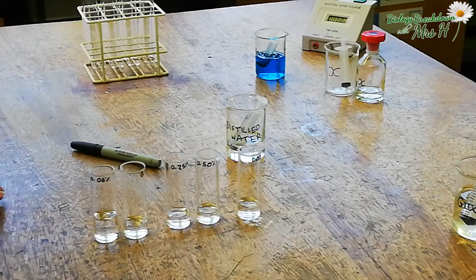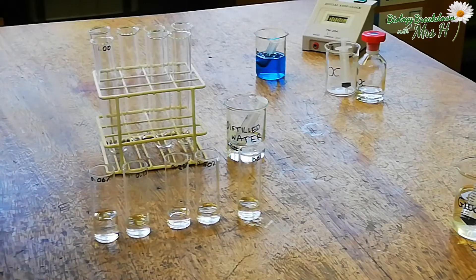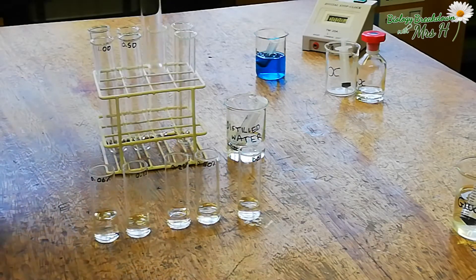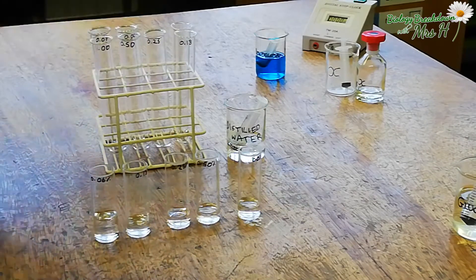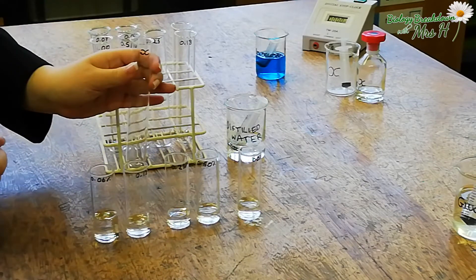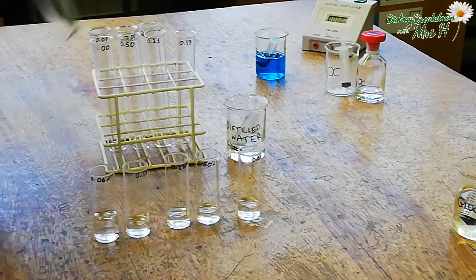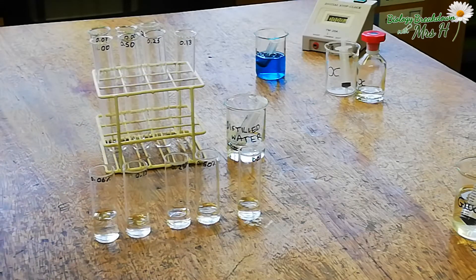Next you need to label five boiling tubes with the same concentrations, but you will also have an extra tube for an unknown solution which we'll label X, and distilled water. The distilled water will be your 0.00% glucose solution, so you should have a total of seven boiling tubes.